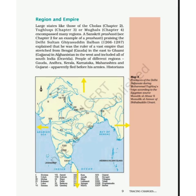The 11th is Badaun, 12th is Kanauj — the names are slightly different in old times. Then 13th Kara, 14th Awadh, 15th Bihar, 16th Lakhnauti, 17th Jajnagar, 18th Malwa, 19th Gujarat. During the reign of Delhi Sultan Ghiyasuddin Balban, there were 24 states, and all the states were kept under his rule.